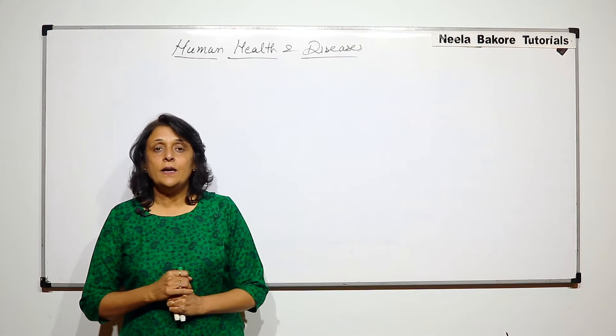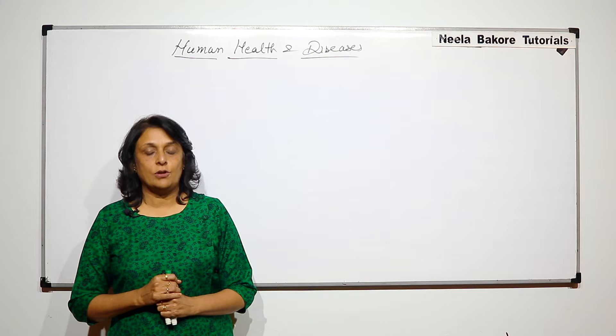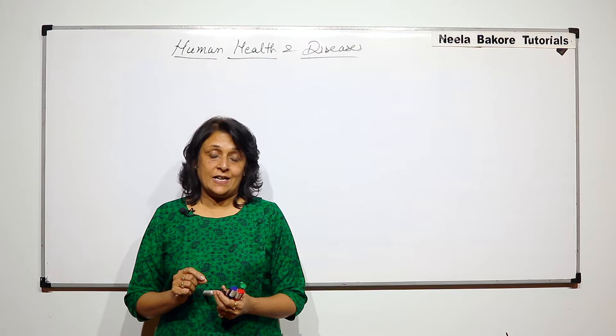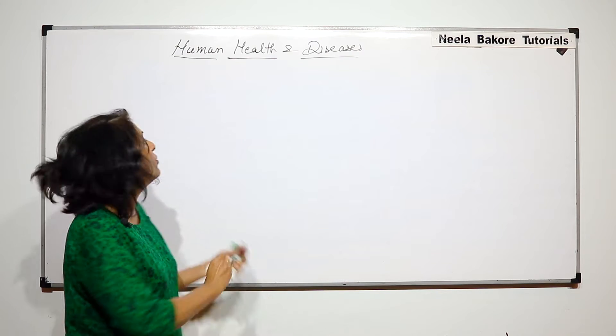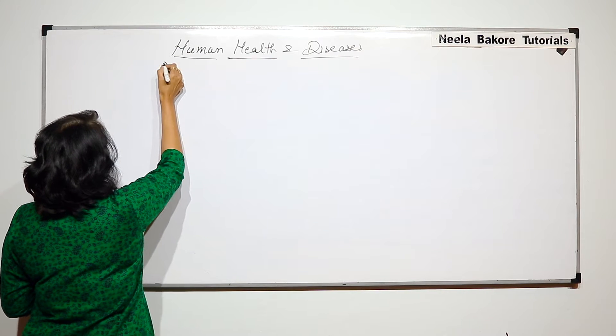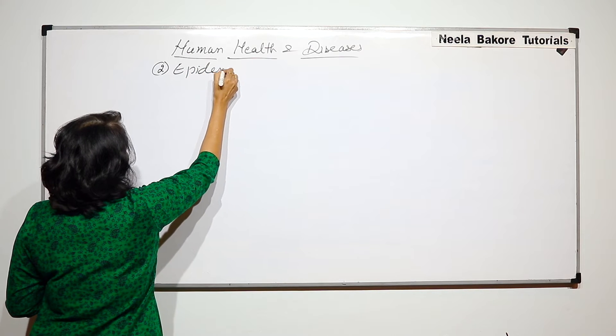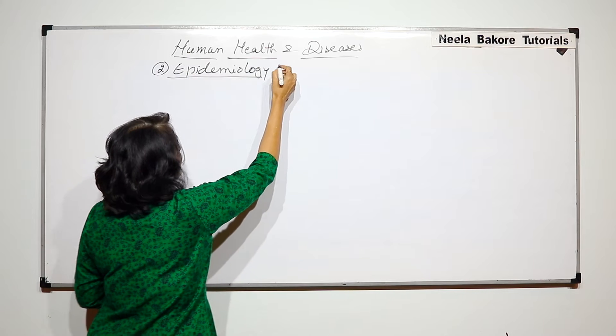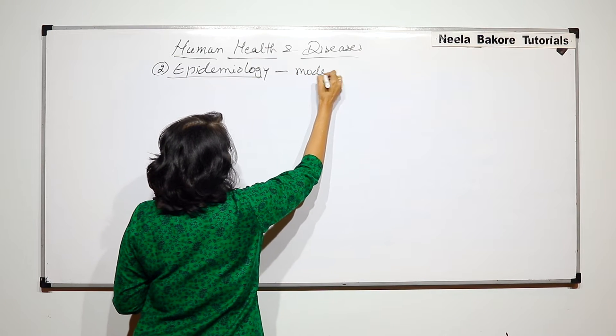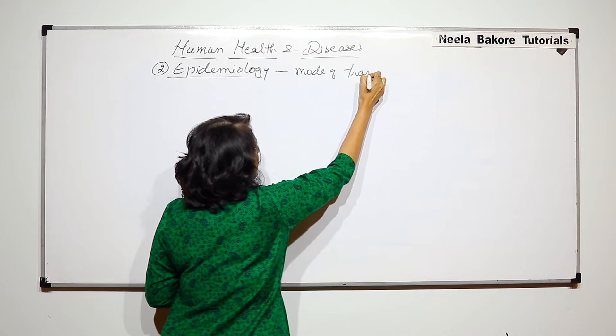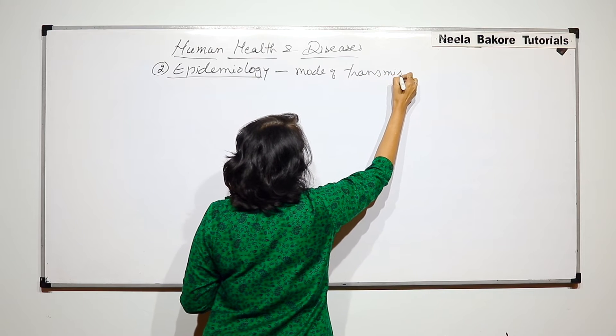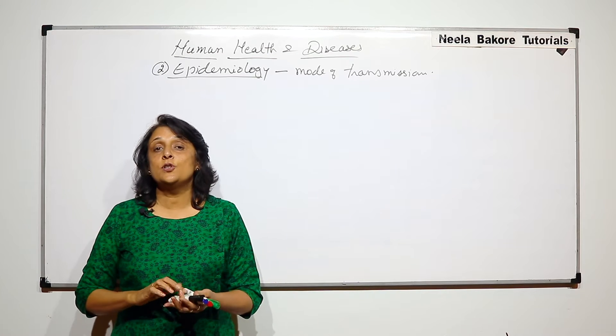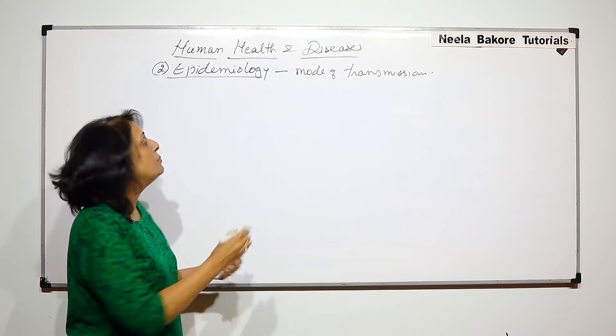In the previous part we talked about etiology, that is causes. Now we will talk about the mode of transmission, that is epidemiology. We have discussed this term earlier that is the mode of transmission of a particular disease. Now this mode of transmission is possible in communicable diseases.